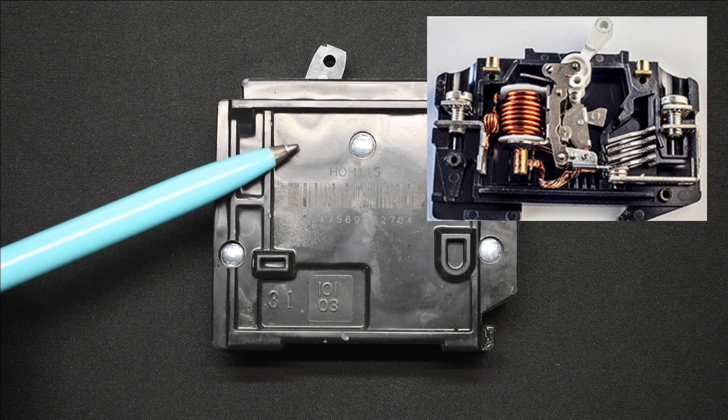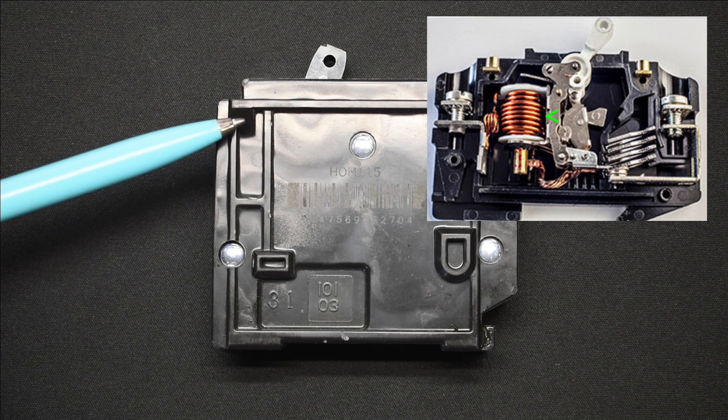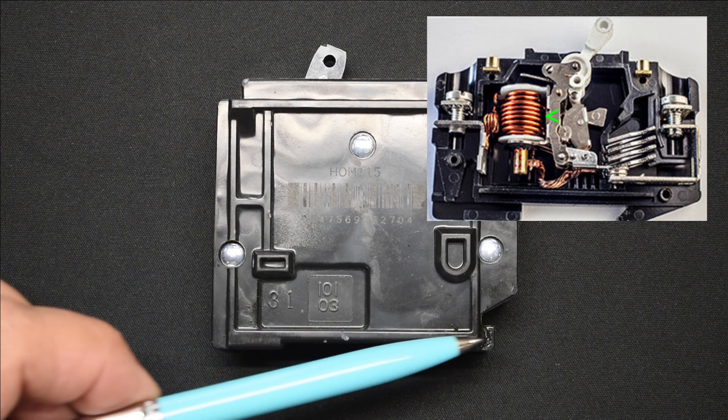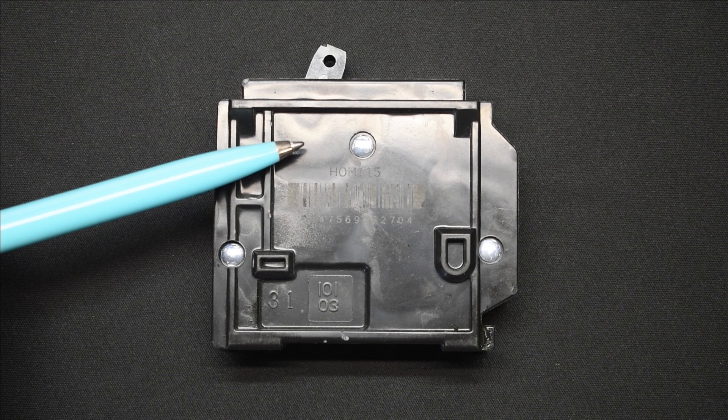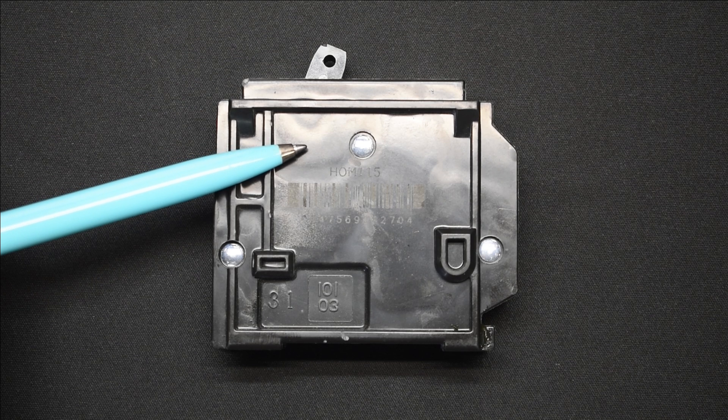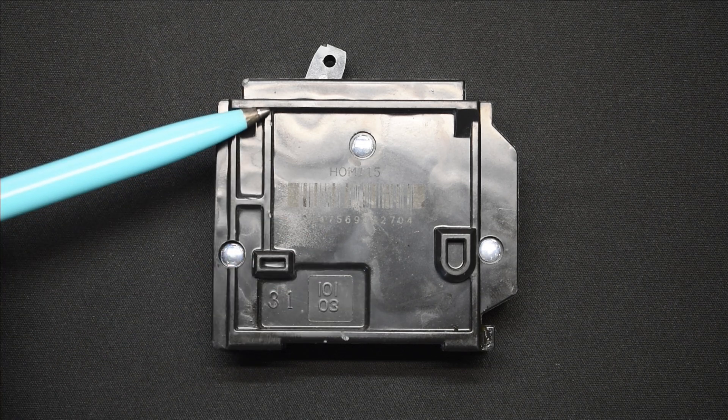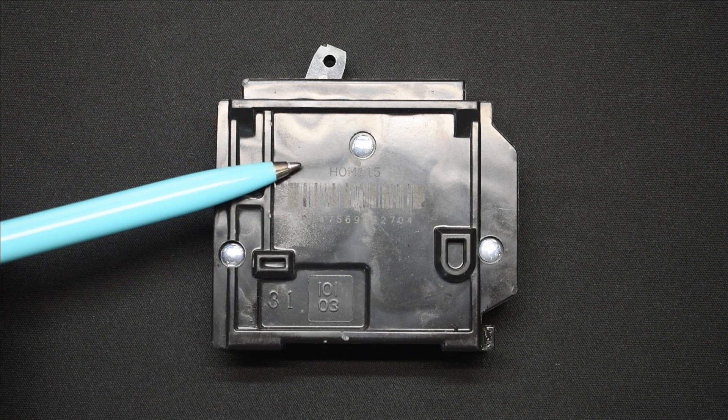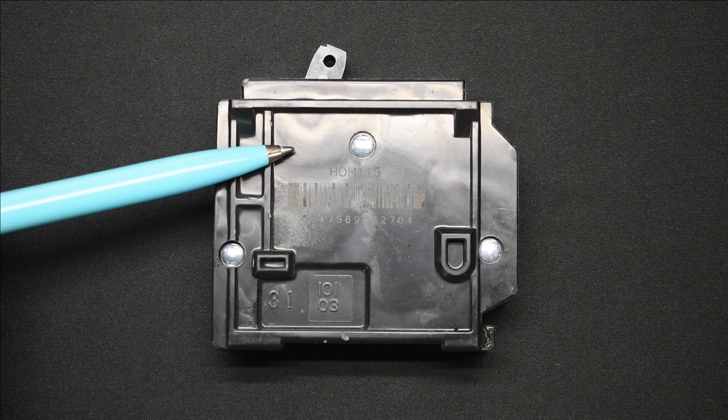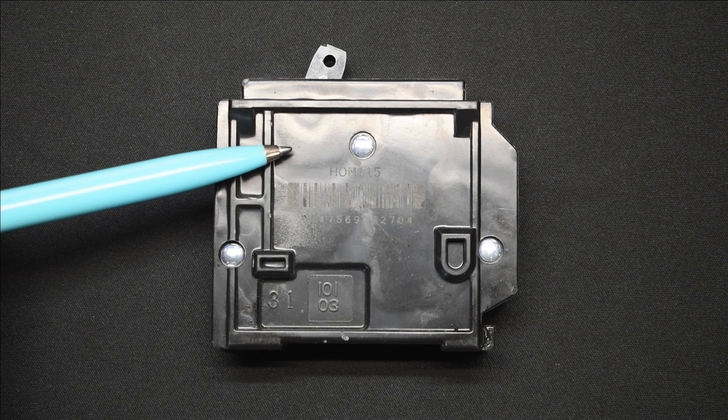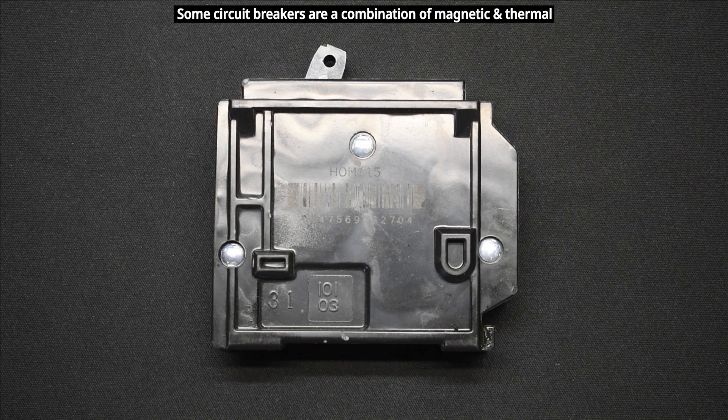The magnetic type has a very small solenoid or electromagnet, and depending on the level of current flowing through the circuit breaker, the magnetic field generated varies. Less current means less magnetic field, and higher current generates a much larger magnetic field. In the event it exceeds the rating of the breaker, the magnetic field is going to cause the breaker to trip.